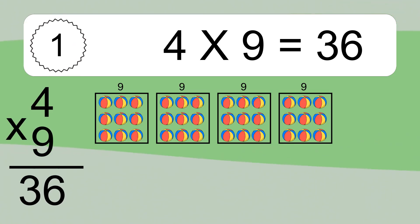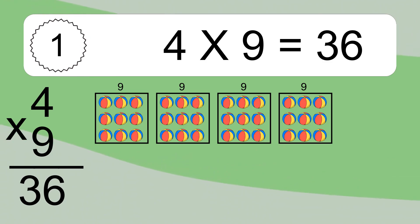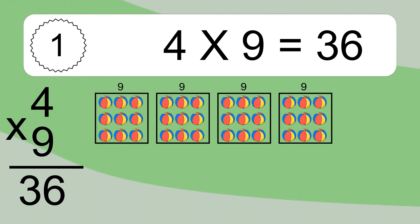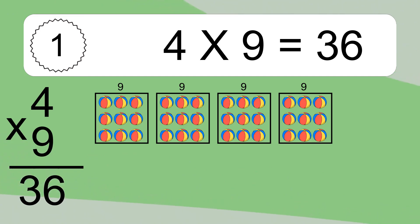We have 4 boxes, and each box has 9 colorful balls inside. If you count all the balls in all the boxes together, you will have 4 times 9 balls. This equals 36 balls.